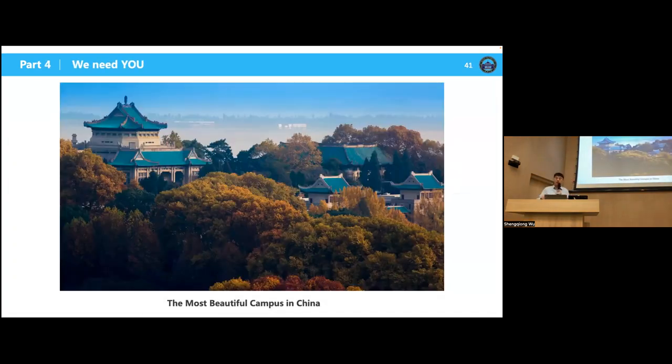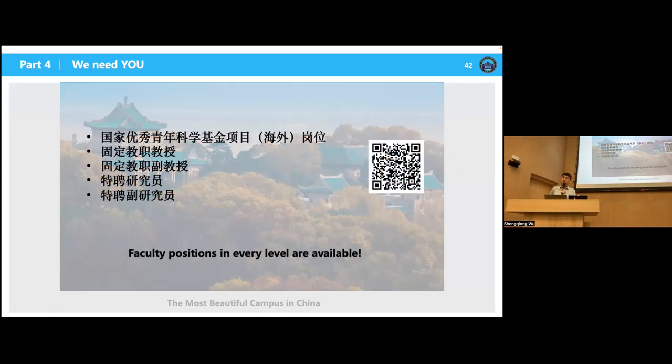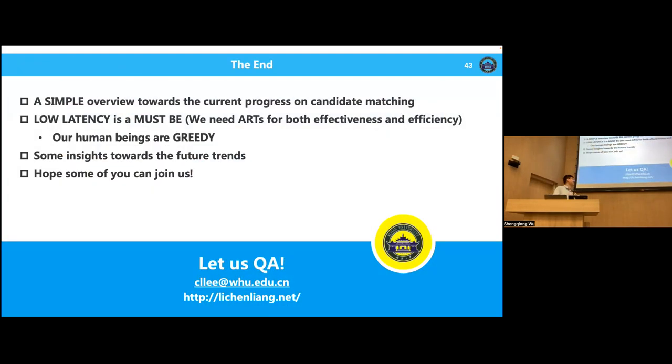Last, allow me to say something more about our lab recruitment. We have university has the most beautiful campus in China and right now we have 50 positions in my lab. If you are interested, please send your email. So here is the conclusion of my talk, which is a simple overview towards the current progress on candidate matching. So in this talk, low latency is the top priority. It is hard to achieve both effectiveness and efficiency at the same time. Also, we discussed some possible future trends. At the last, hope some of you can join us. Thank you very much.